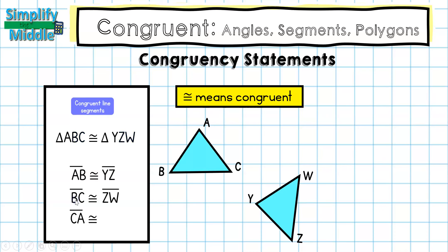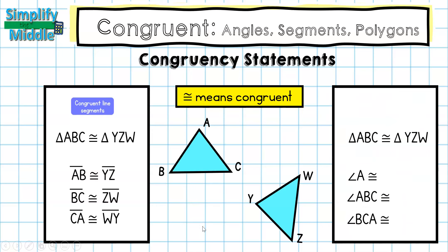Next, line segment CA — although the letters aren't right next to each other, they're in the third and first positions. So looking for the third and first position on the other triangle, line segment WY is congruent to line segment CA. For angle measures, it's simpler because we just look at one letter. The measure of angle A is congruent to the same position on the other triangle, which is the measure of angle Y.